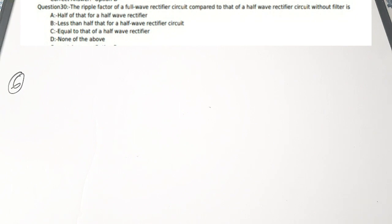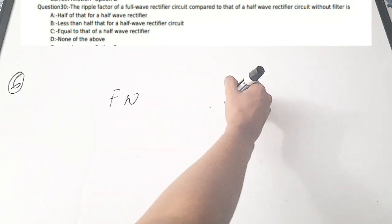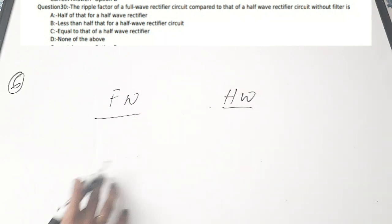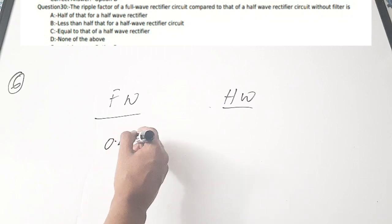Sixth question: the ripple factor of a full wave rectifier circuit compared to that of a half wave rectifier circuit without filter is — A) half that of half wave rectifier, B) less than that of half wave rectifier, C) equal to that of half wave rectifier, D) none of the above. The ripple factor of a full wave rectifier is approximately 0.48.